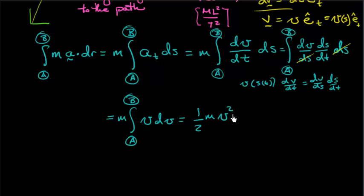And remember, it's a definite integral, so I'm going from point a to point b. And what I do is I evaluate v at these two endpoints. So this is 1/2 mass times speed squared at point b minus 1/2 mass speed squared at point a.